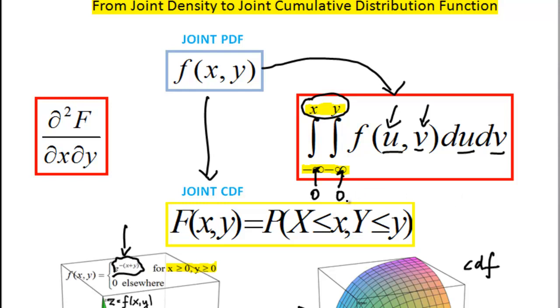So there are just two things, three things to remember. Keep the upper limit of integration as x and y and change the variables in the function that you are given to u and v and integrate it with respect to u and v. The lower limit of integration will change also depending on the formulation of the variables.